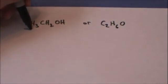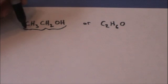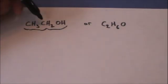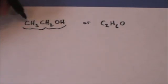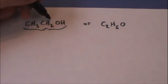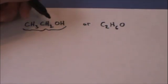So this formula gives us some information about the structure. We know that there's a methyl or a CH3 group, then a CH2 group, and then an OH attached.